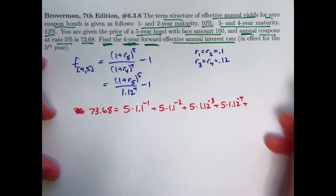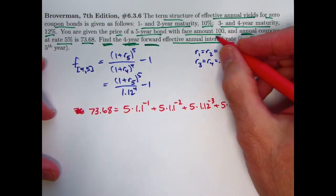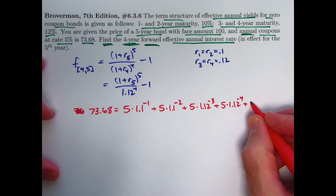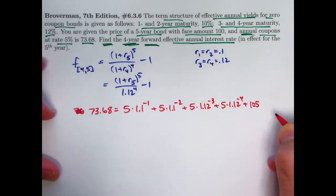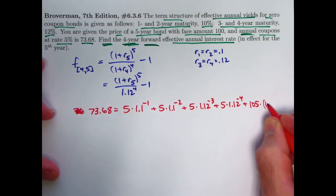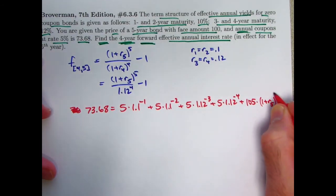And finally, we've got the final coupon of 5 plus the redemption value, which is assumed to be the face amount of 100. Well, 105 needs to go back in time by 5 years. Multiply by 1 plus the unknown R5 to the negative 5 power.